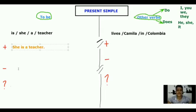So she is a teacher. Now let's write the negative form, okay? Let's see. She is not, or she isn't a teacher. Very good.